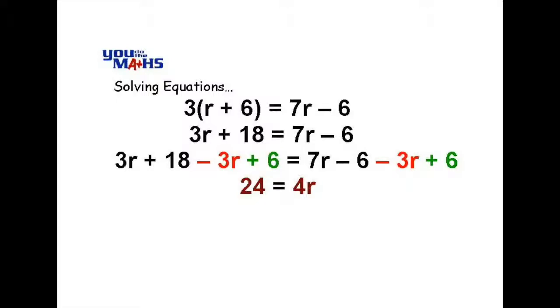Now to remove the 4 next to the R we have to do the opposite of the multiplication. So the opposite of multiply by 4 is to divide by 4 and we do that on both sides of the equation. And what we're left with on the left hand side is 6 and dividing by 4 on the right hand side leaves us with just the R. So R equals 6.